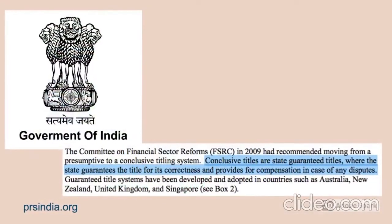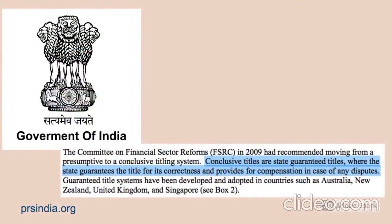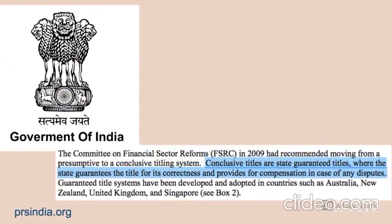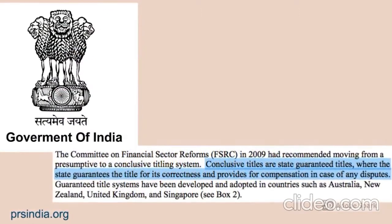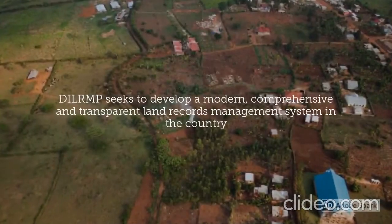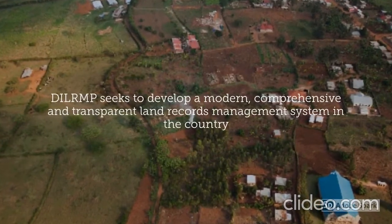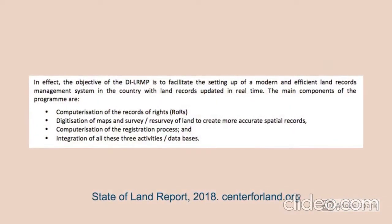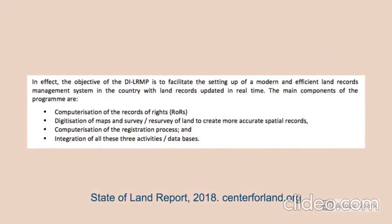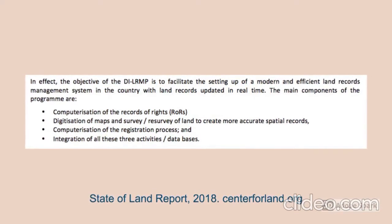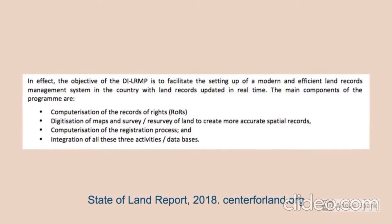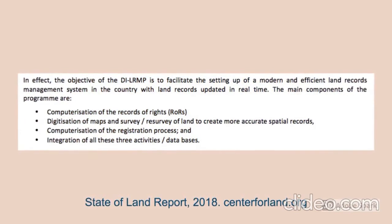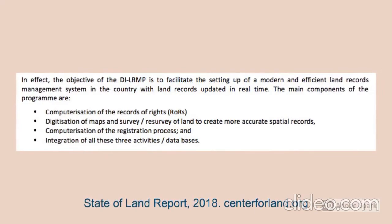This is a centrally sponsored scheme that sought to bring reforms in land administration in India. The ultimate goal of the scheme was to bring in conclusive titling for all land ownership, and to develop a modern, comprehensive, and transparent land records management system. The components included digitization of textual and spatial land records, integration of records of rights with cadastral maps, conducting surveys and resurveys using modern technology, and computerizing the registration process, among others.